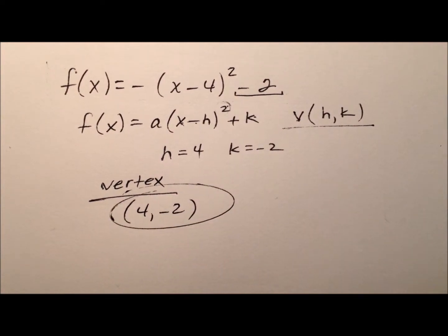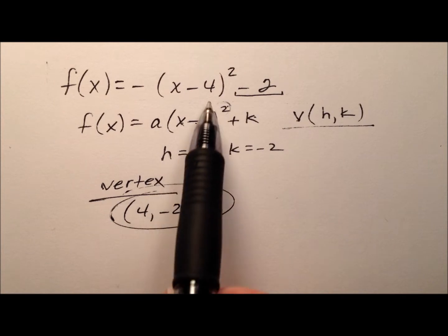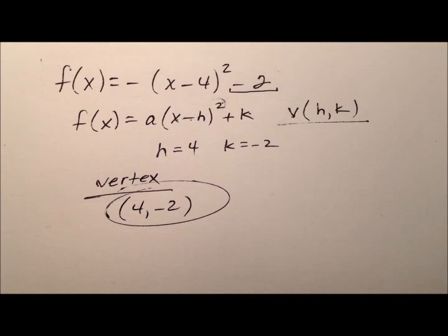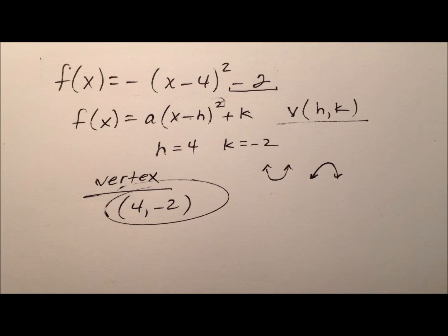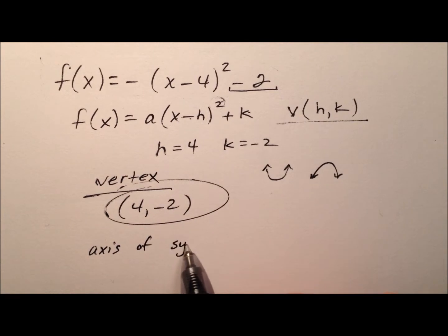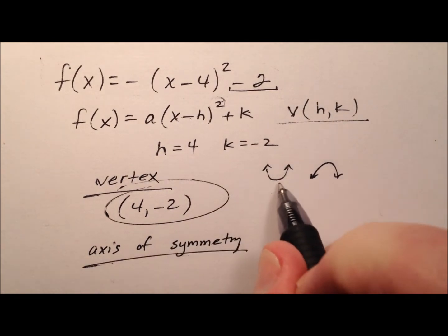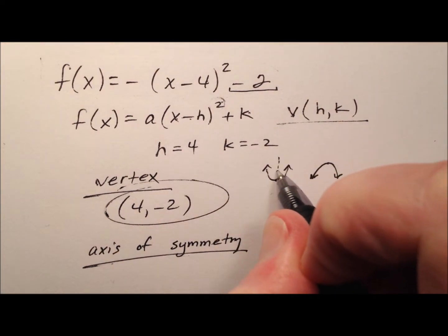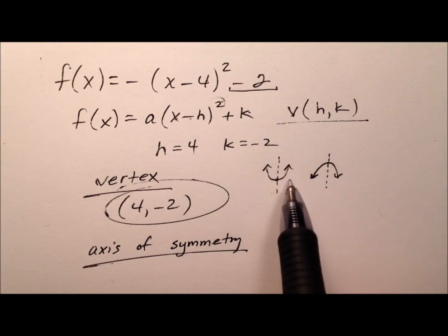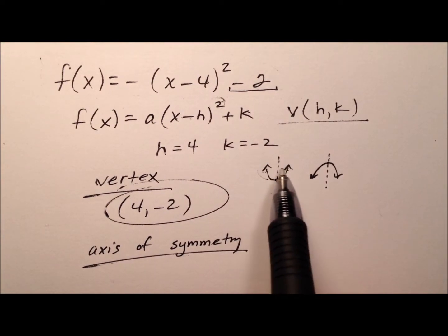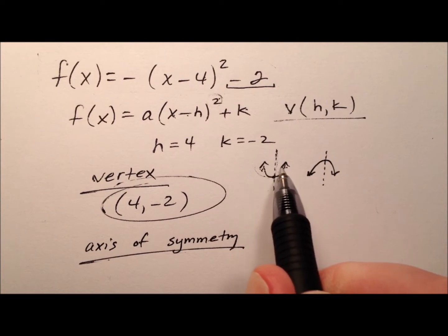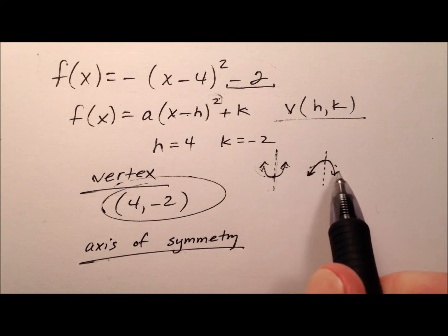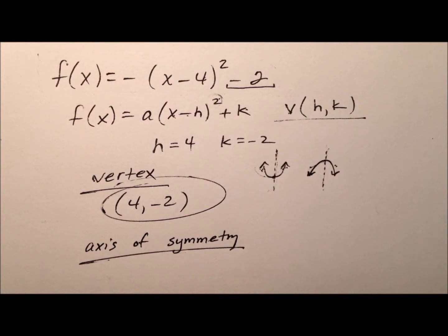So that's the first thing: the vertex of the parabola. When you graph a quadratic function, it's going to be a parabola — that u shape that opens either upward or downward. The next thing we'll talk about is the axis of symmetry, which is going to be a vertical line that passes through the vertex. The two legs of the parabola are mirror images across this axis of symmetry, across this vertical line.